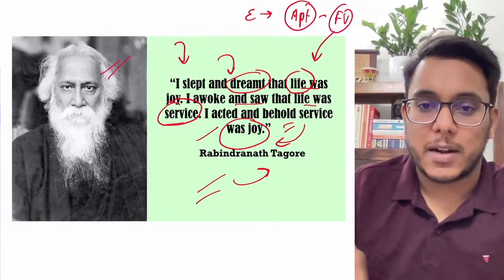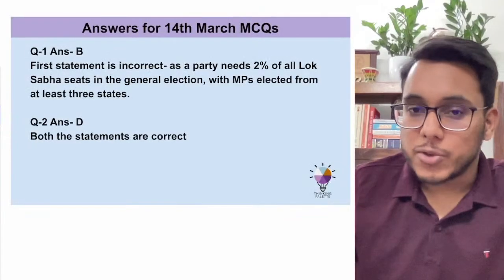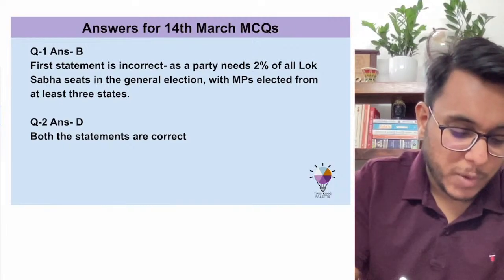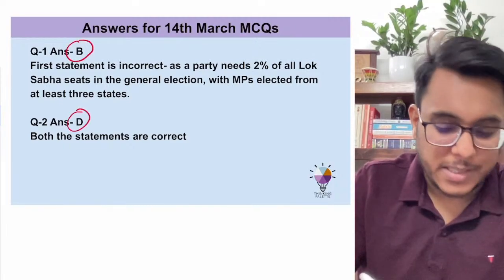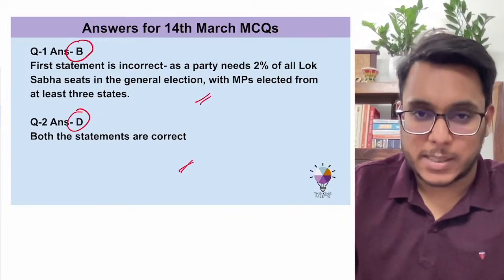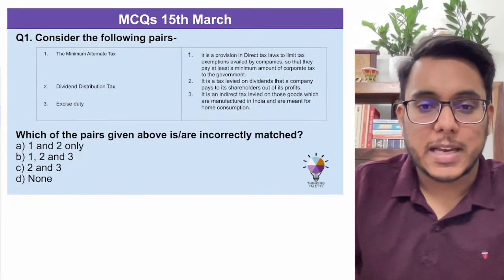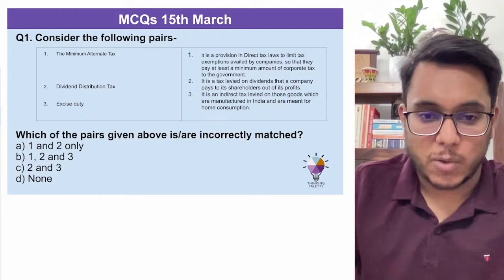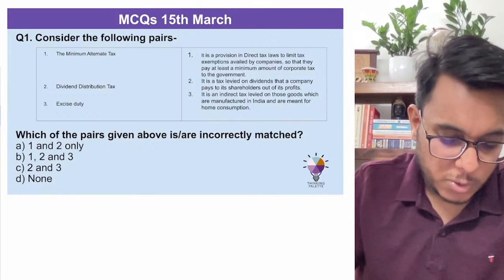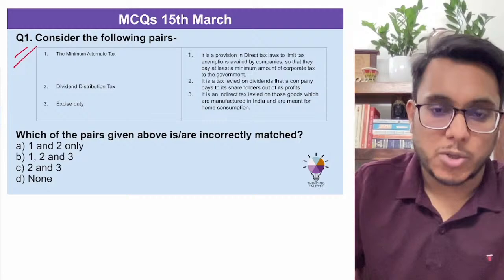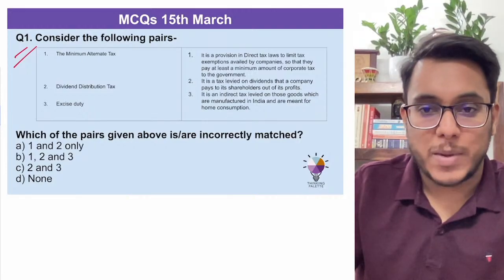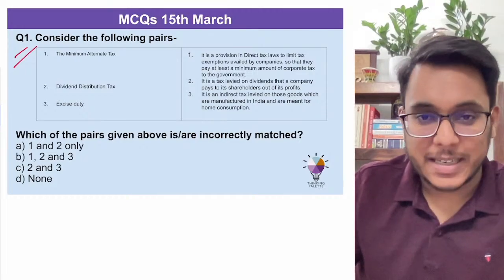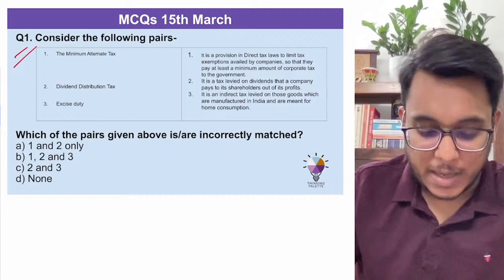First, let's see the MCQ answers for yesterday, the 14th of March. Question number one: correct answer is B. Question number two: correct answer is T. You can pause the video to see the explanations. Now taking up today's MCQs — one is with respect to taxation with certain options to find correct or incorrect matches. Please read the question, pause the video, and mark the correct option.